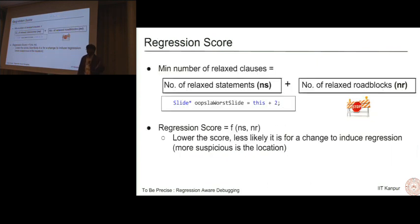What is our regression score? The partial MaxSAT will return the minimum number of relaxed clauses. This is the number of relaxed statements plus the number of relaxed roadblocks. We denote these as ns and nr. Our regression score is a function of ns and nr. Lower is the score, the less likely it is for a change at this particular location to cause regression, and hence the more suspicious it is. It's more viable for repair. You can take F as simply the sum of these two. If you are relaxing less roadblocks and less statements, you are getting a much more viable location for repair.